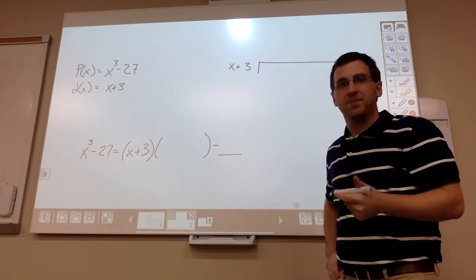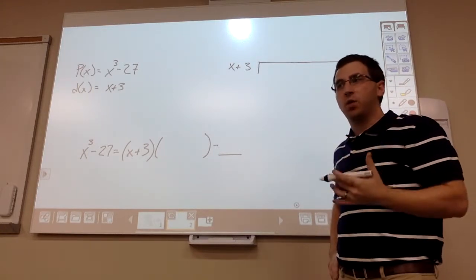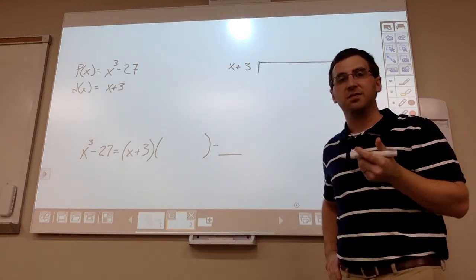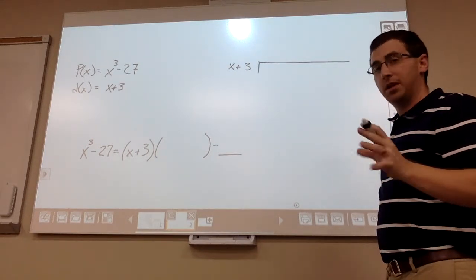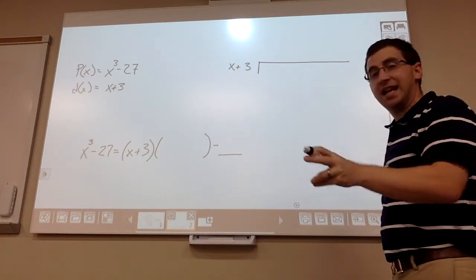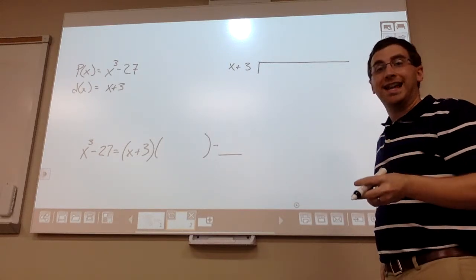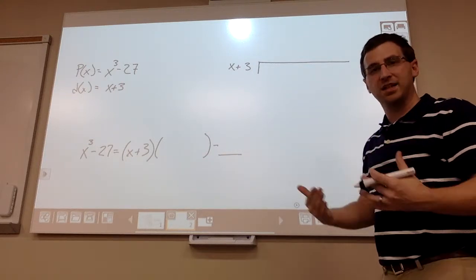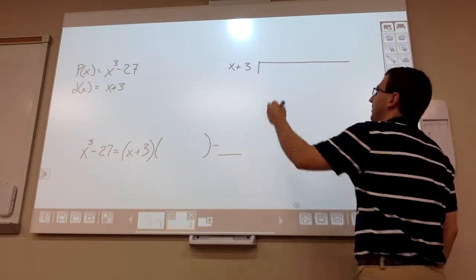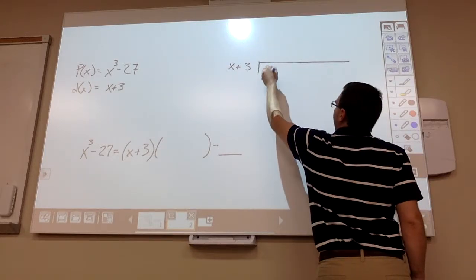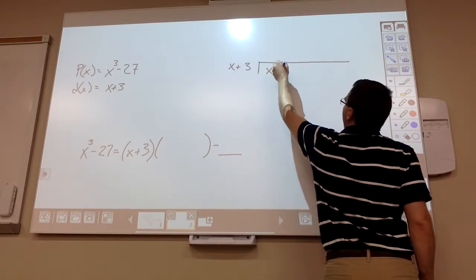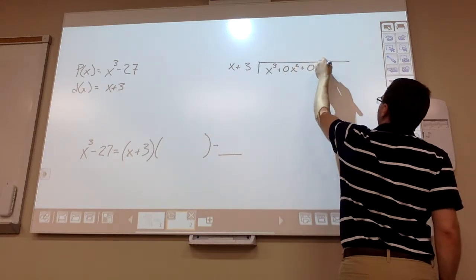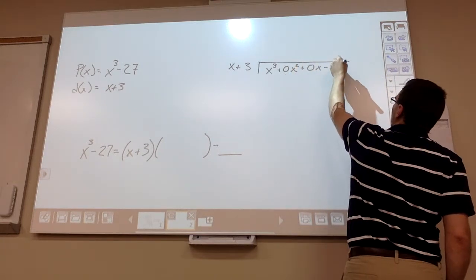We're missing some pieces. In long division, it would not be a bad idea to get in the habit of filling in those missing pieces. So what I mean by missing pieces, we don't see an x² term, we don't see an x term. So numerically, that would be 0x² + 0x. In other words, when we fill them in, that would be x³ + 0x² + 0x - 27.